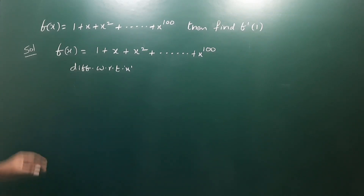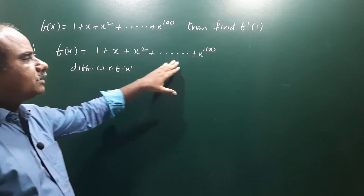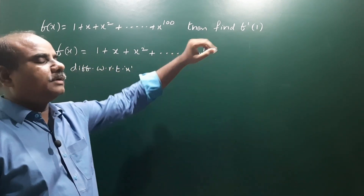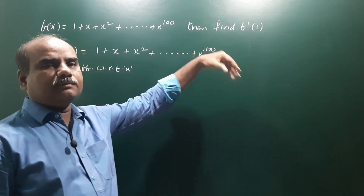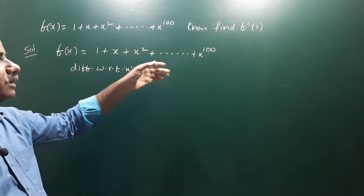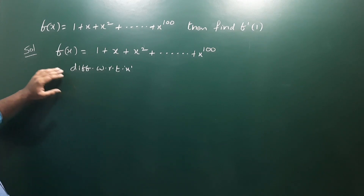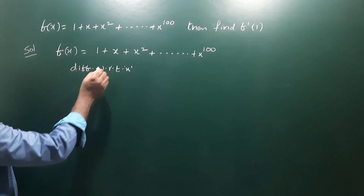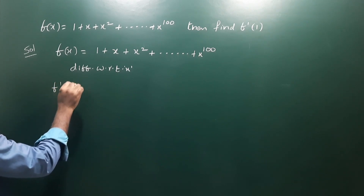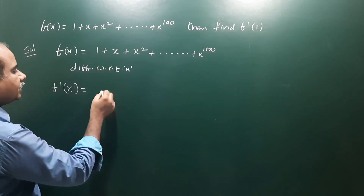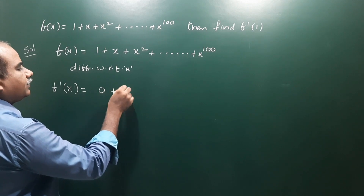Okay, next one. f(x) is given as f(x) = 1 + x + x² and so on up to x^400. Find f'(1). So in order to find f'(1), we need to calculate f'(x). For that purpose, we have to differentiate with respect to x. The derivative of f(x) can be written as f'(x). The derivative of 1 is 0, it is purely constant, so its derivative is 0. And the derivative of x is 1.